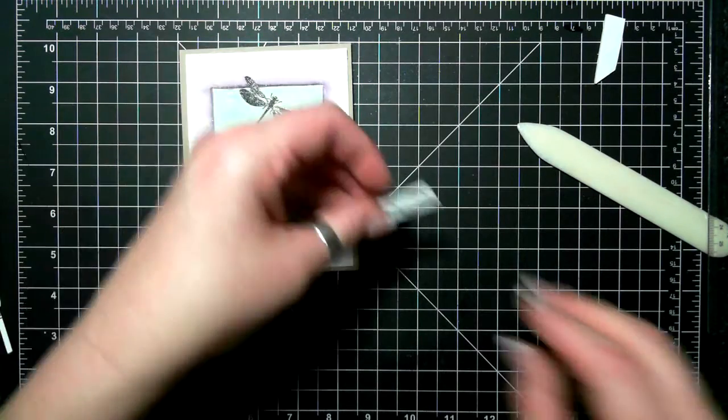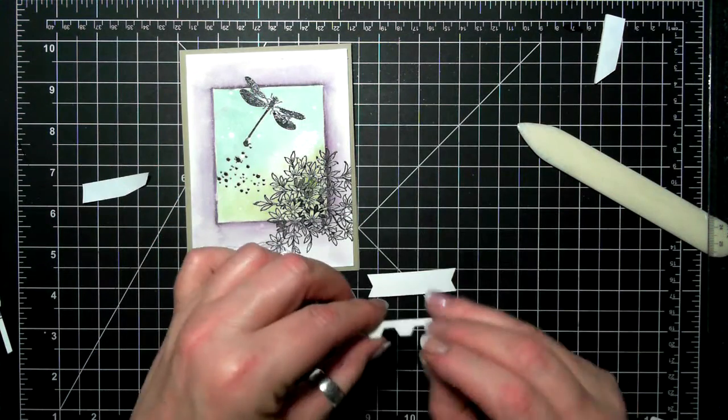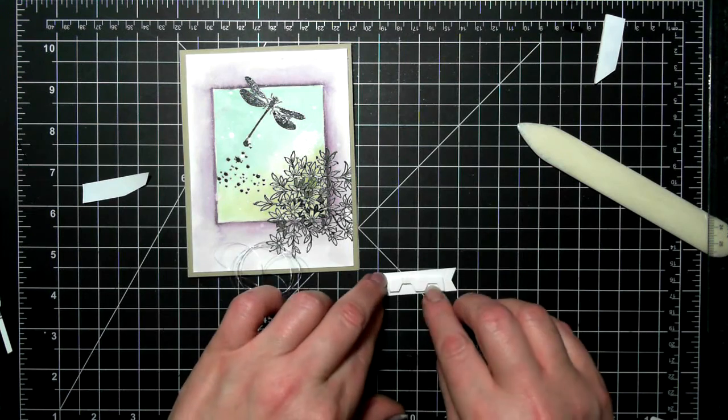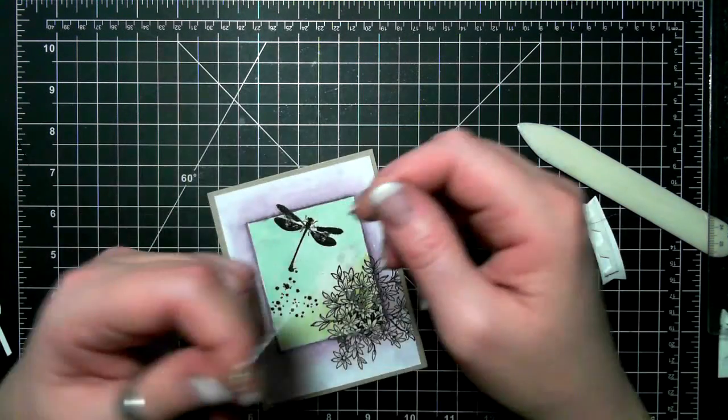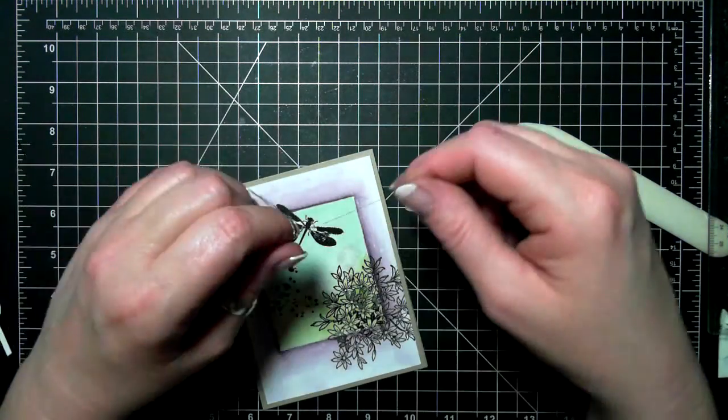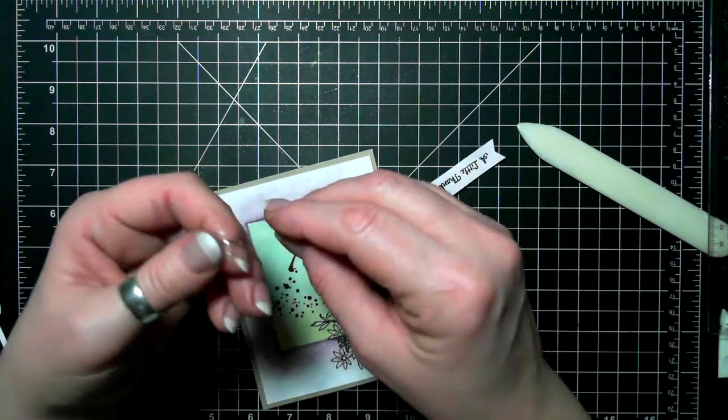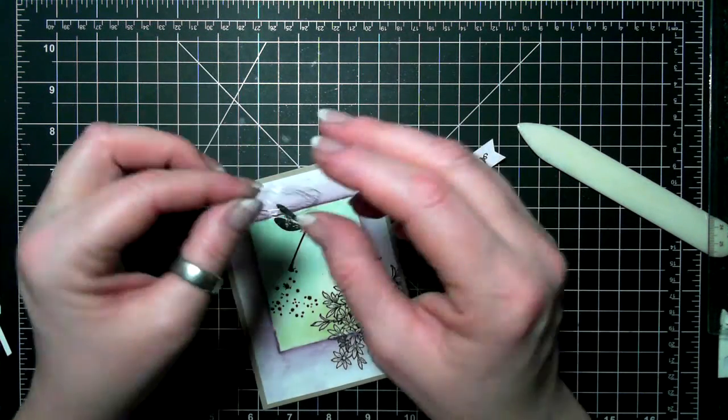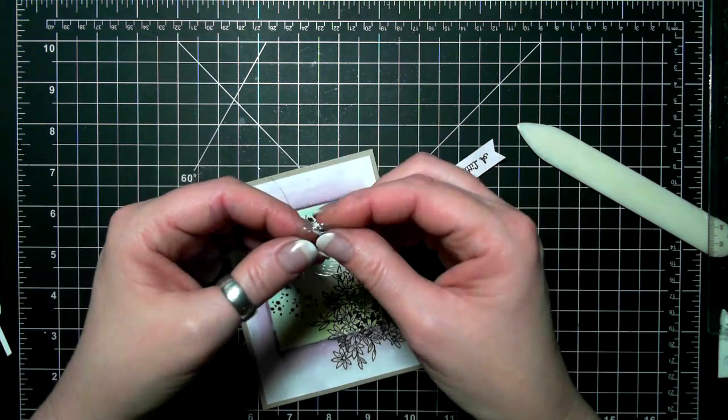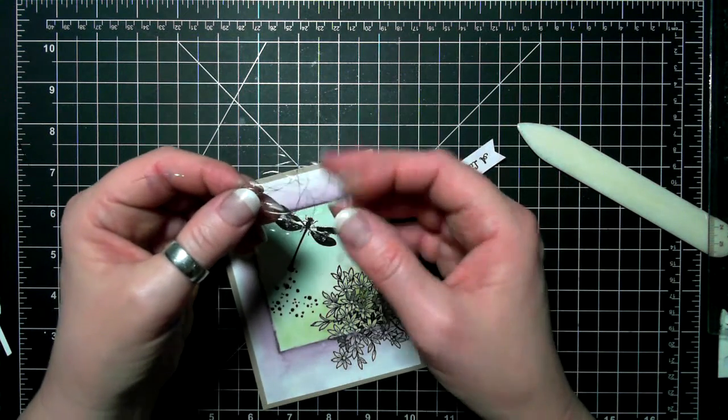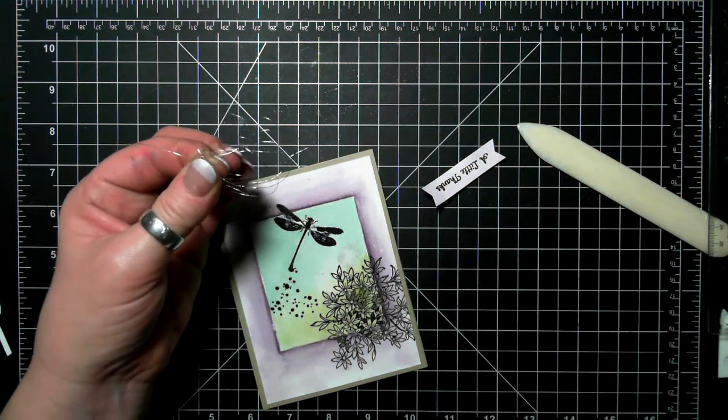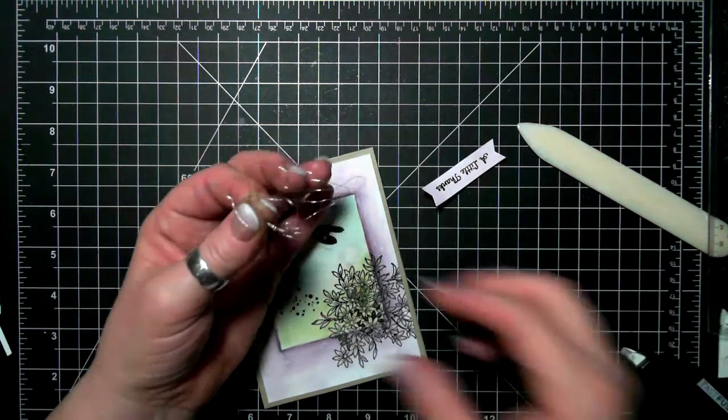And I put some dimensionals on the back of that flagged sentiment and I'm going to use the dimensionals to sort of hold it down. And yeah you know I do have a tendency to sort of fuss a little bit with it to make it go but there's a lot going on in this card and I was just having fun with it so this is how I usually do it.